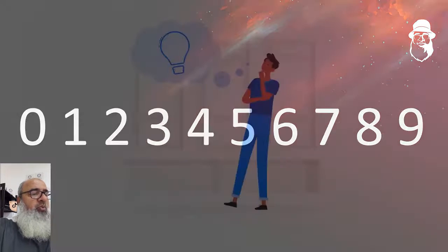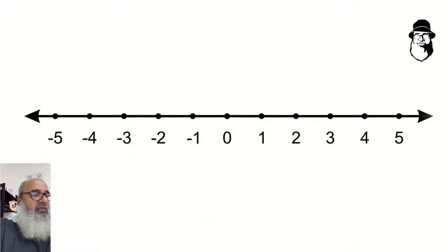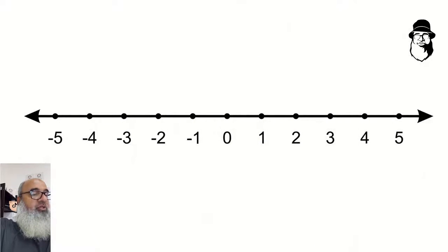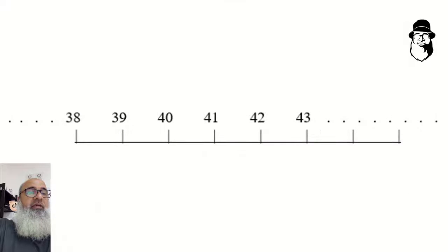A good way to imagine numbers is to imagine them on a straight line, like this. It's called the number line, and we can pick out a section of the line anywhere we like. This makes it easier to work with numbers.